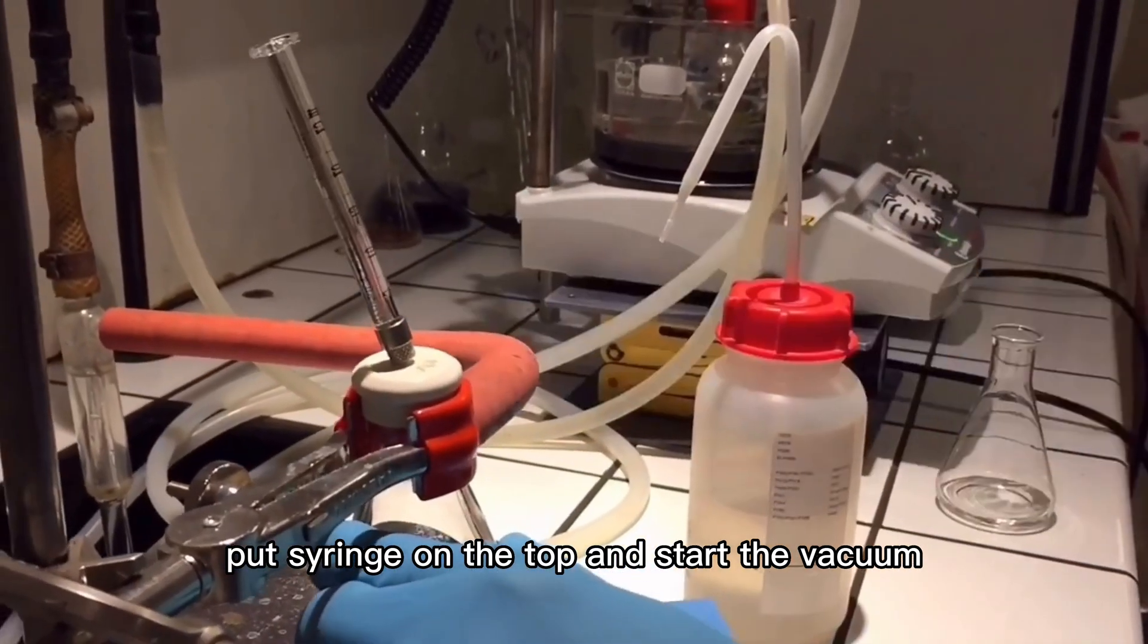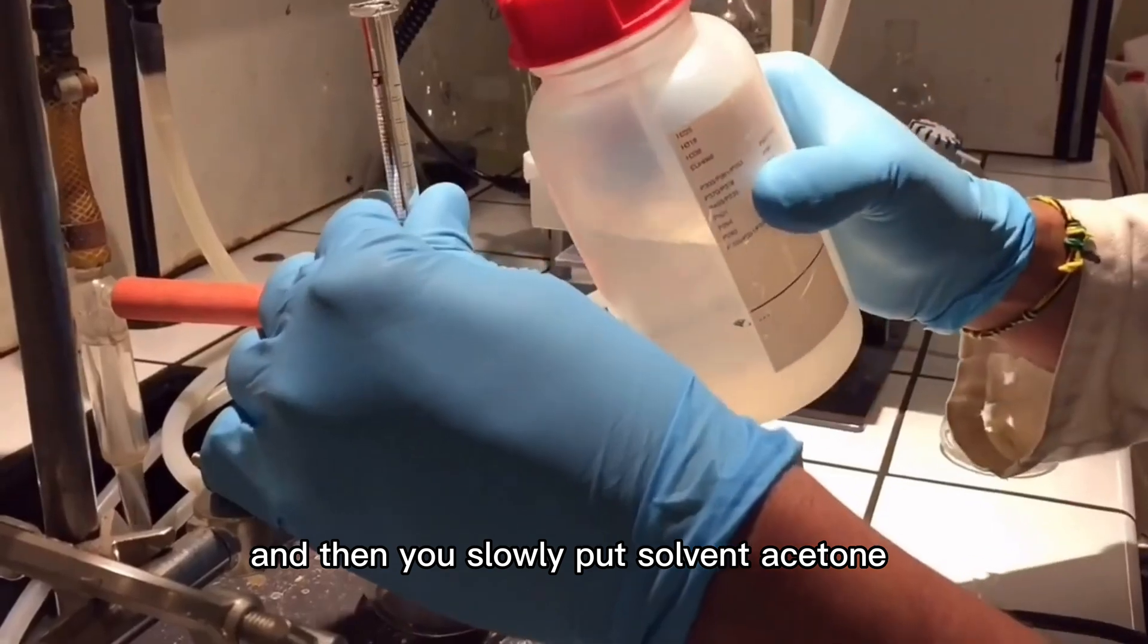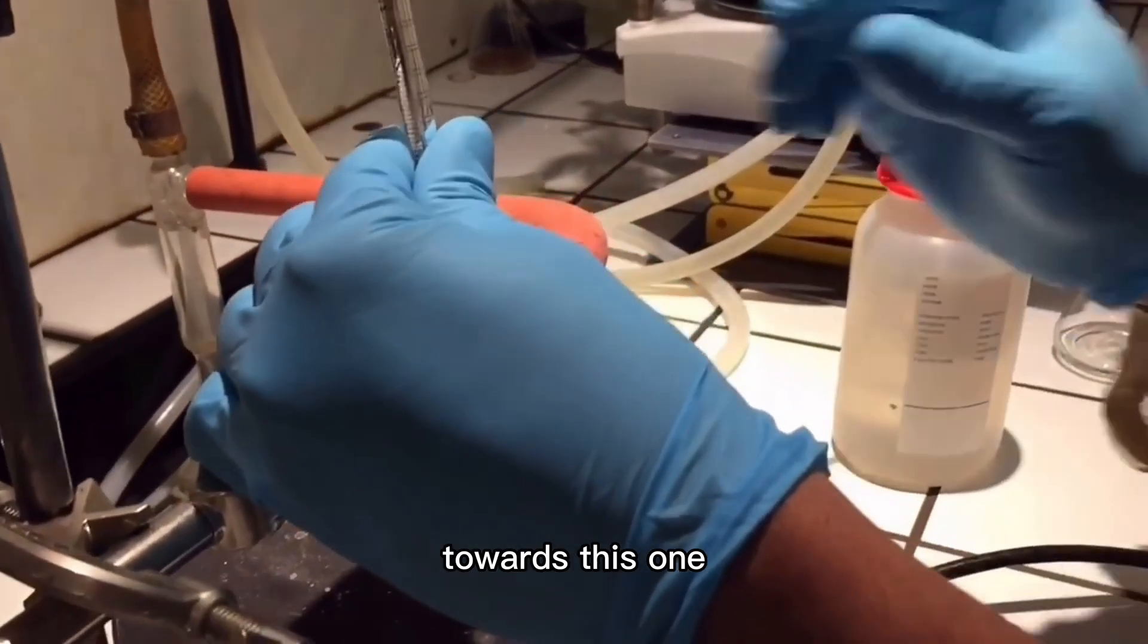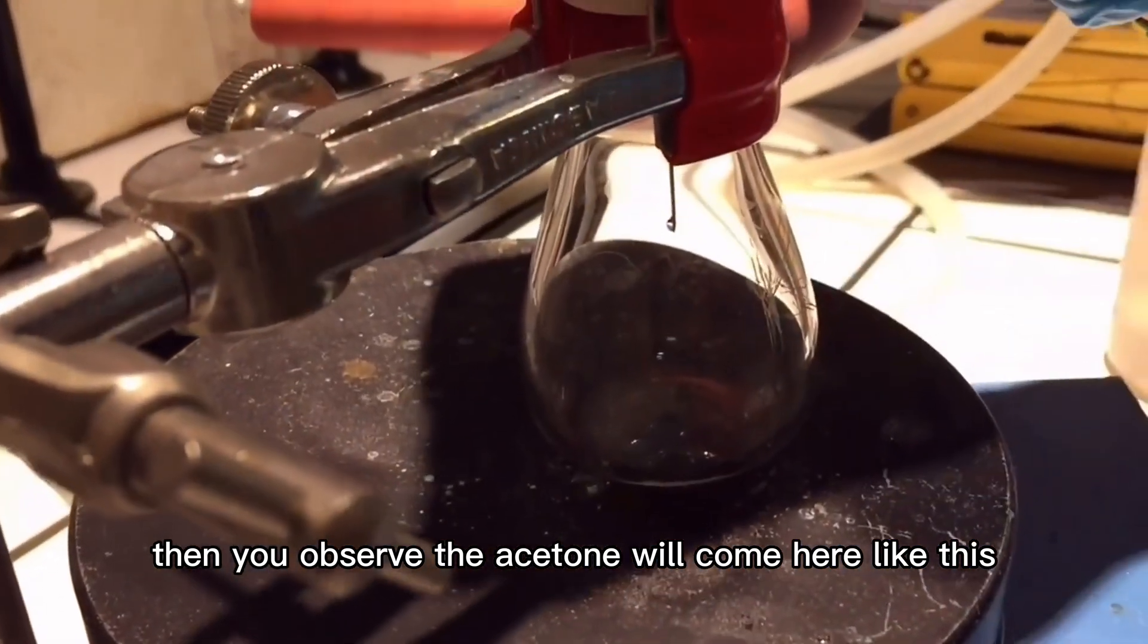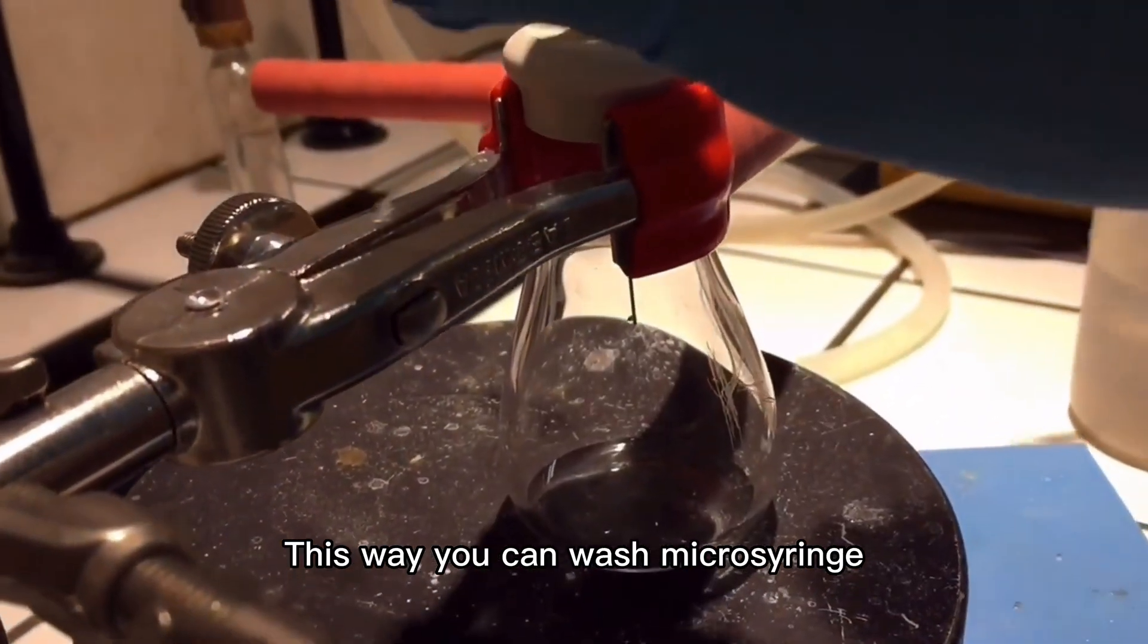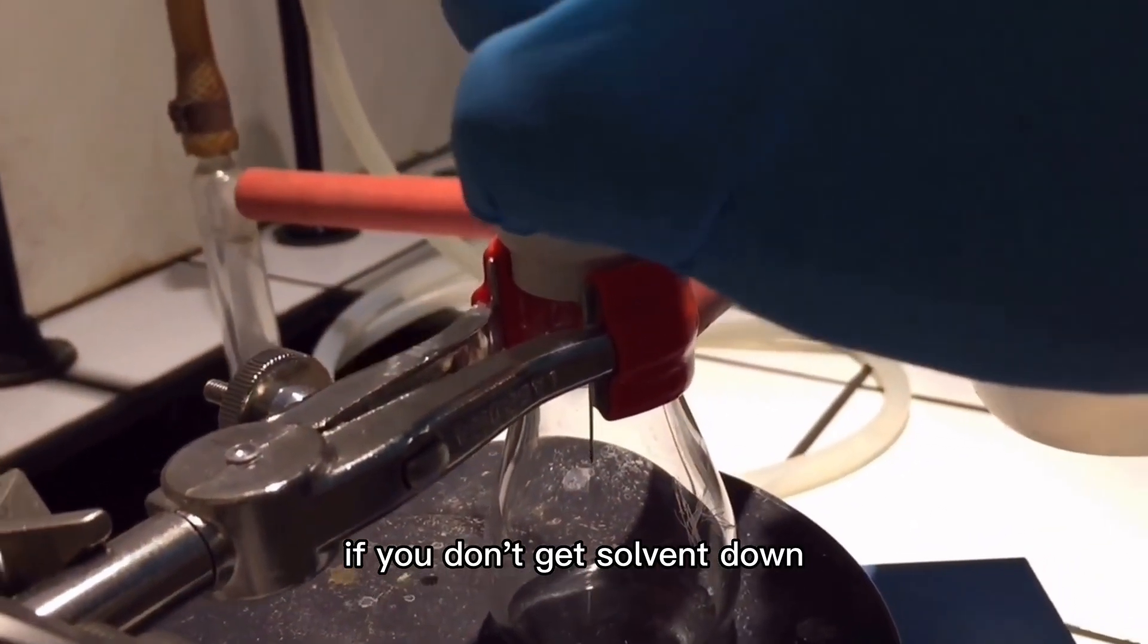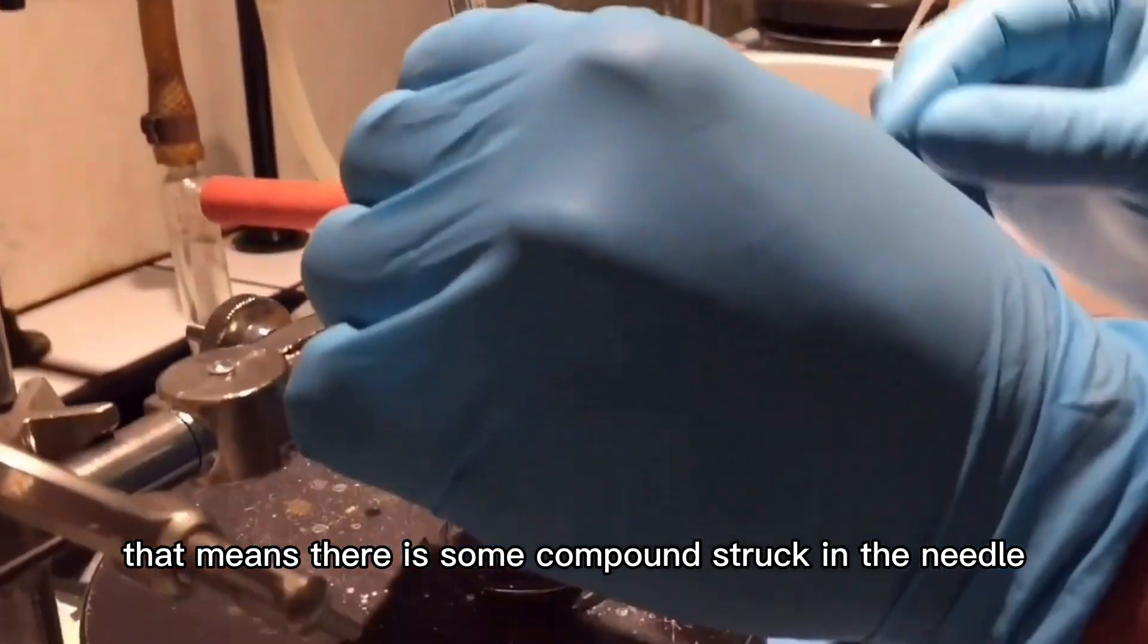Start the vacuum, then slowly put solvent acetone towards this. You'll observe the acetone will come here. Like this, you need to wash the micro syringe. If you don't get solvent down, that means some compound is stuck.